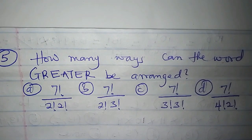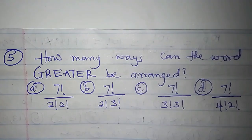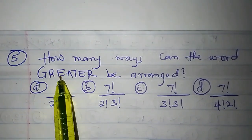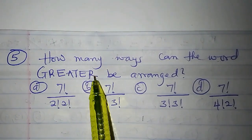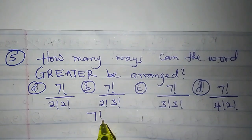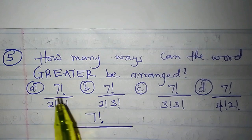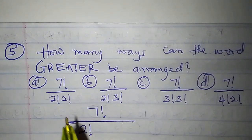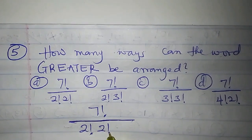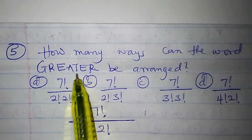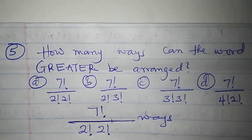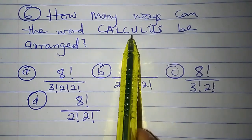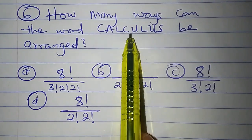Question 5: how many ways can the word GREATER be arranged? There are 7 letters in this word, so that gives 7 factorial. The letter E is repeated two times, so we divide by 2 factorial. The number of ways of arranging the word GREATER without any condition is 7 factorial over 2 factorial.